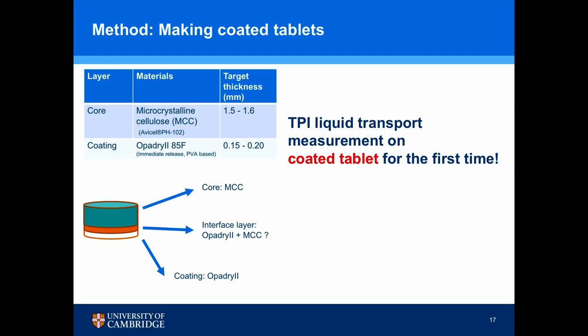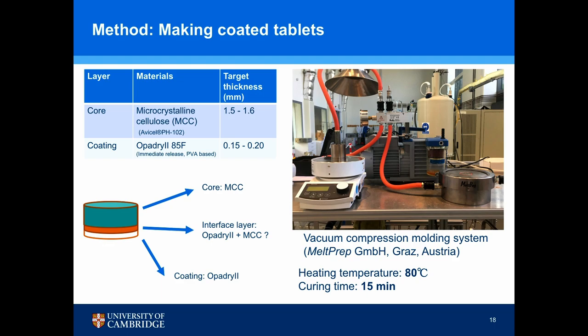For the first time, we apply the TPI liquid transport measurement on coated tablets. We use microcrystalline cellulose as the core — a very common excipient — and Opadry 2, an immediate-release PVA-based coating formulation, as the coating material. We use a vacuum compression molding system to apply the coating on one side only, with flat tablets made for convenience. I'd like to point out that there is an extra interface layer, because when the coating powder is melted on top of the porous core, some of the coating materials bind to the core and form a dense layer, which we call the interface layer.